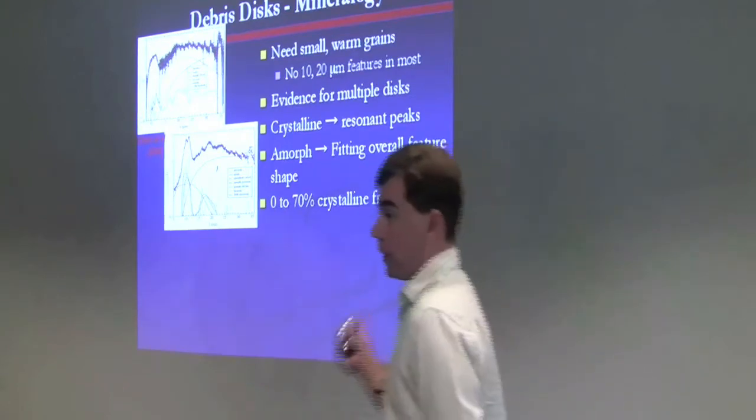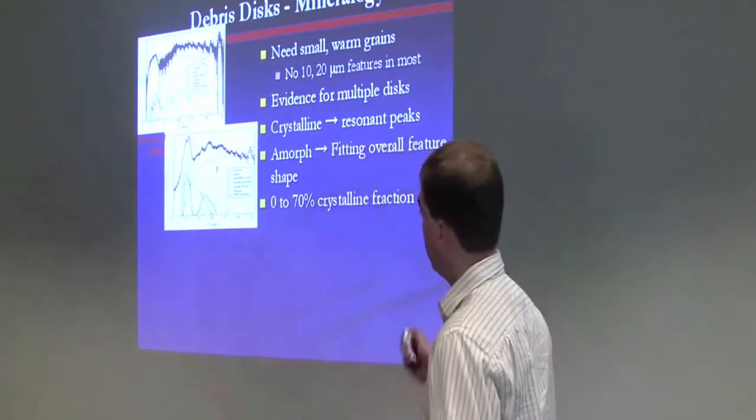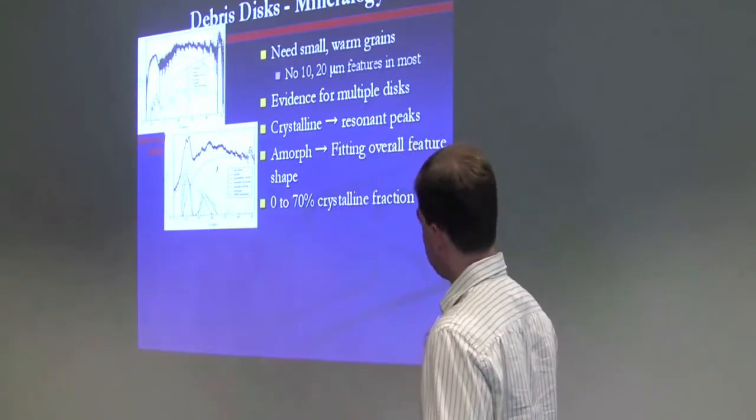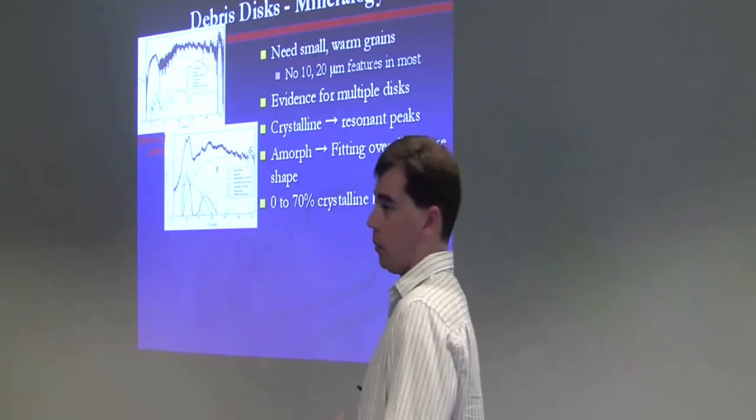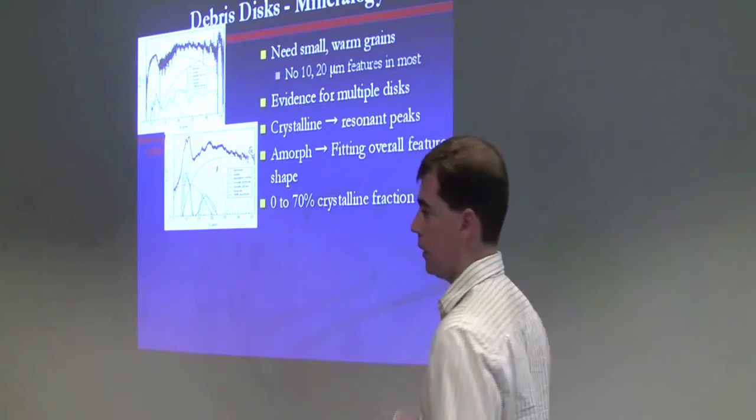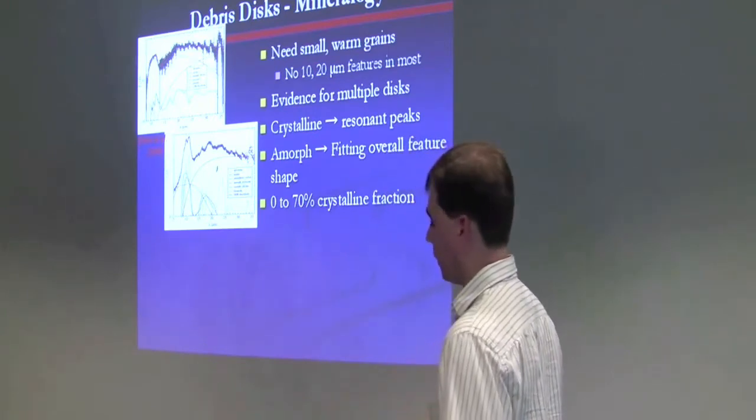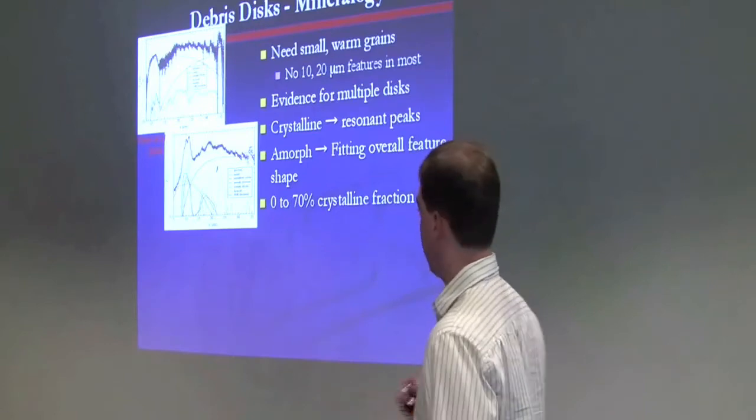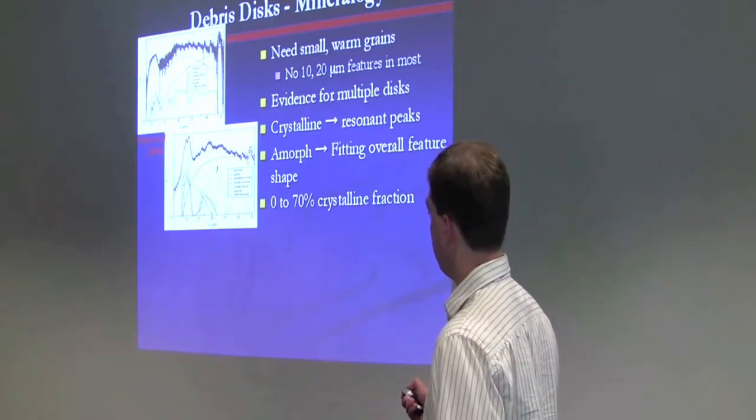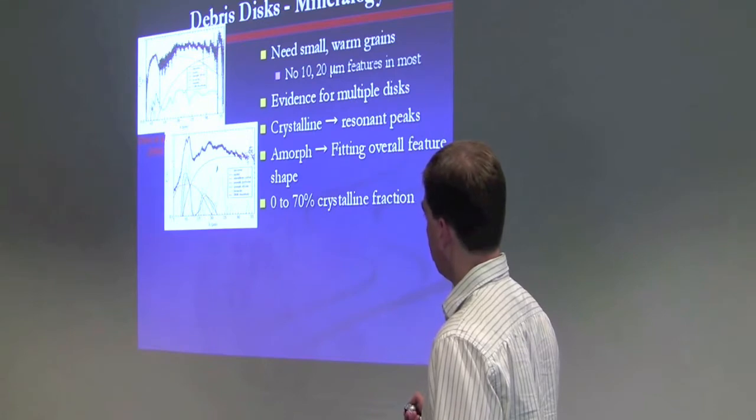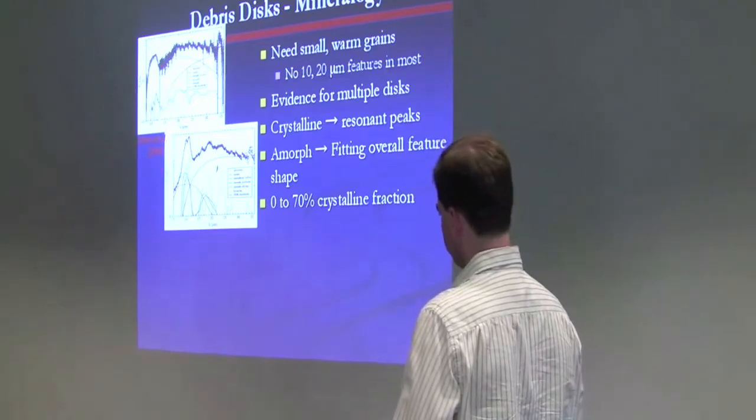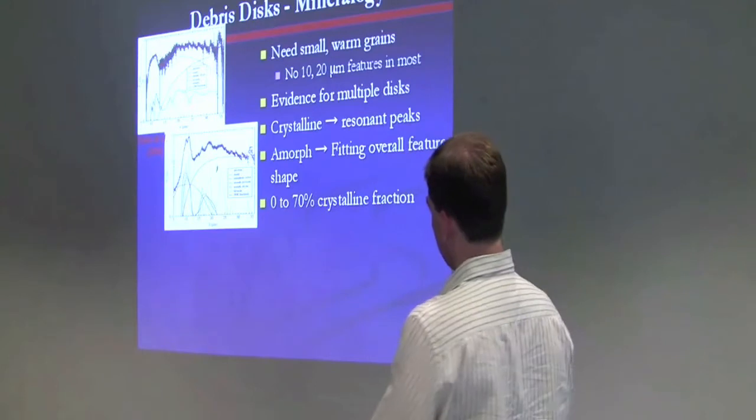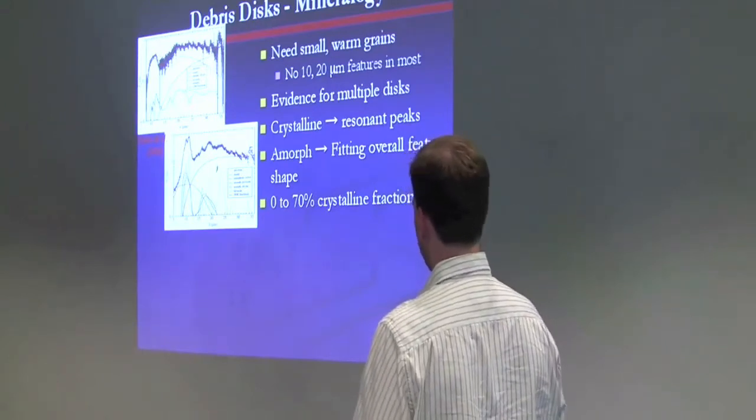One interesting thing about these debris disks is that we can start doing mineralogy of them in the mid-IR. In order to do that, you need small, warm grains. Cold grains won't emit enough energy to be seen. And large grains don't really have enough spectral contrast to be able to see the spectral features. There are examples of emissivity features, thermal emission features, from silicate materials around two different debris disks. You can see there are differences in their spectral signatures.